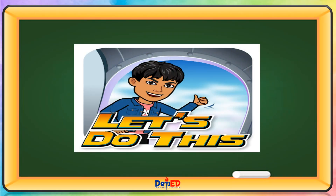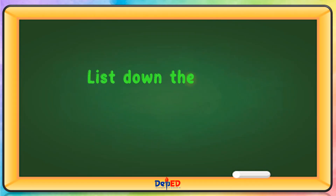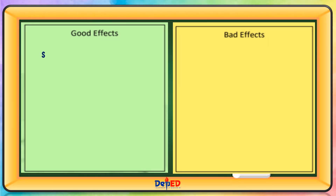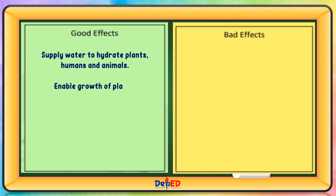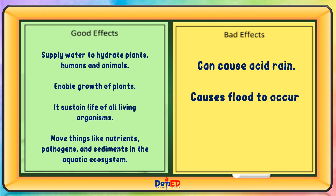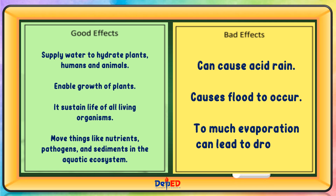Activity: List down the effects of the water cycle on living things. Good effects include: supplying water to hydrate plants, humans, and animals; enabling the growth of plants; and sustaining life of all living organisms; and moving nutrients, pathogens, and sediments in the aquatic ecosystem. Bad effects include: causing acid rain, causing floods, and excessive evaporation leading to drought.